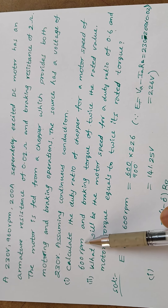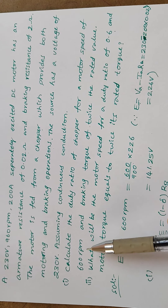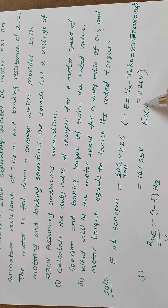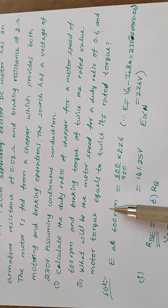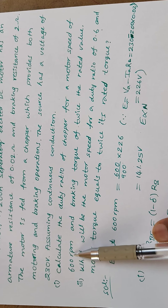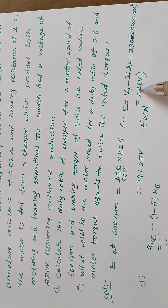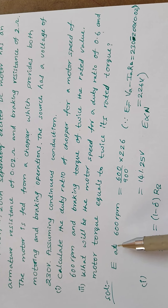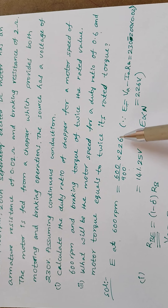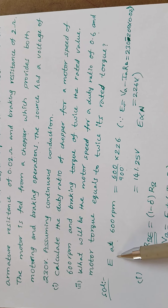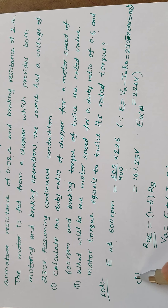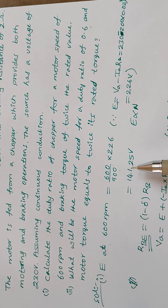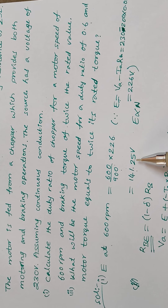With respect to 600 RPM, the back EMF is found using the relation E is directly proportional to N, so E2 by E1 equals N2 by N1. N2 is 600 RPM, E1 is 226 volts, and N1 is the rated speed of 960 RPM. Substituting: E2 equals 600 by 960 times 226, giving a back EMF of 141.25 volts at 600 RPM.